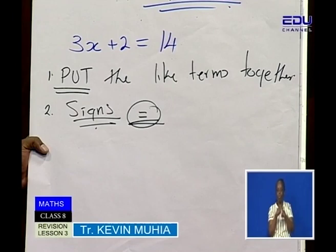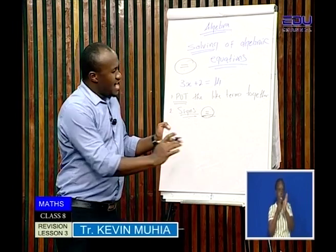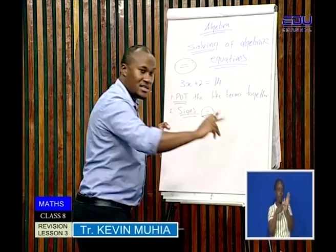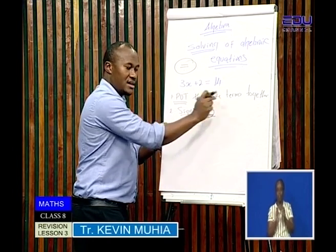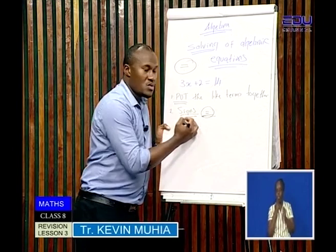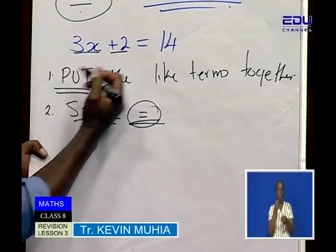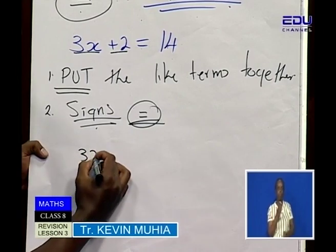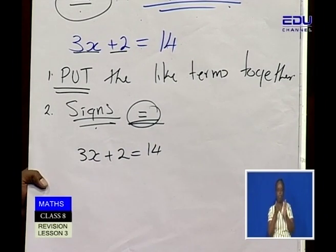In solving, we have an equal sign. A number is on one side of the sign and when it goes to the other side, it must change. From one side of the equal sign to the other side, it must change. Those are the two rules that you must observe and obey.